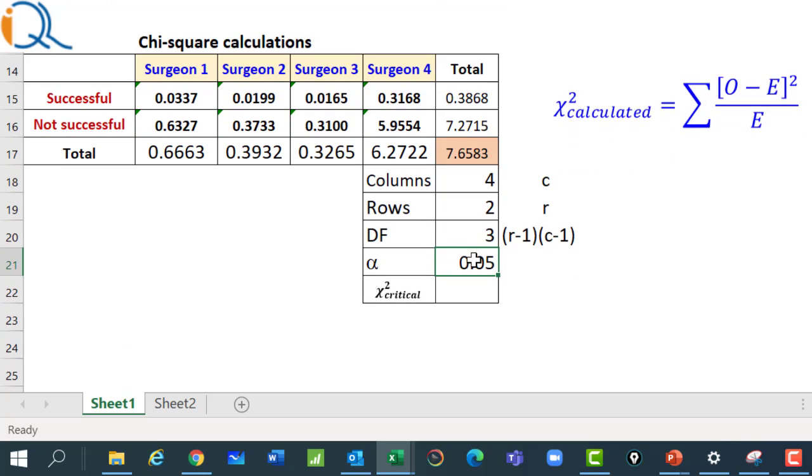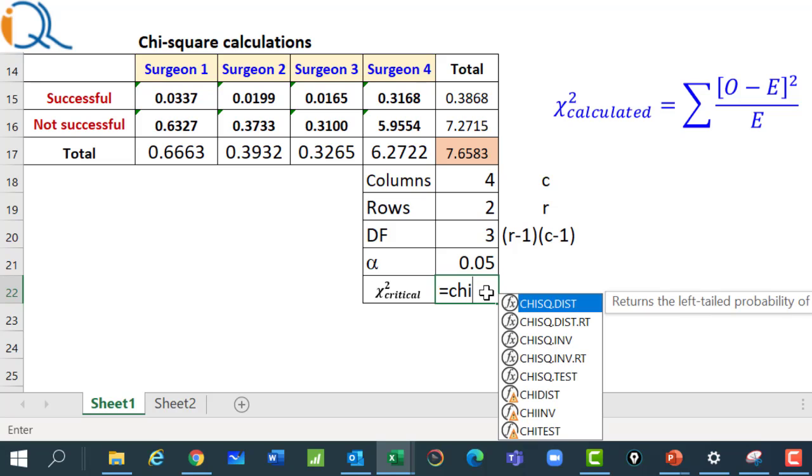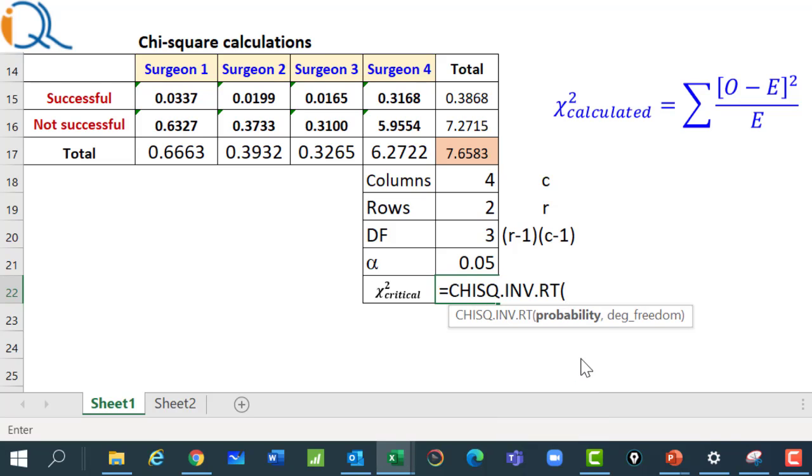Alpha risk is given as 0.05. Now, I use the excel formula for chi-square critical value and which is equal to CHI INV dot RT. Remember, since this chi-square value is always going to inflate when the differences are large, we always look at the right-tailed value of the chi-square distribution. So, the probability is alpha risk 0.05. Degrees of freedom is three. This is your critical value of the chi-square which is 7.8 at 5% alpha risk.